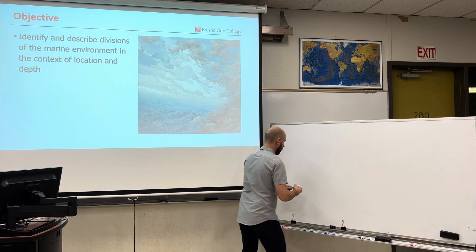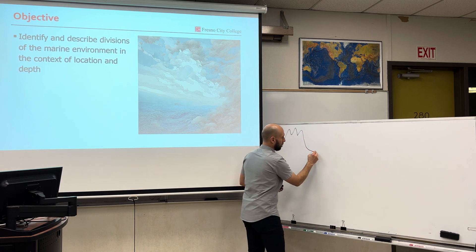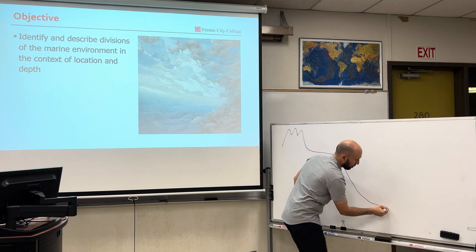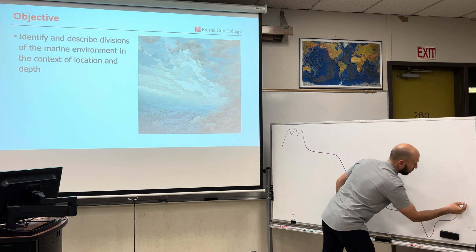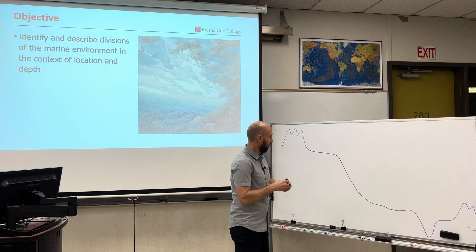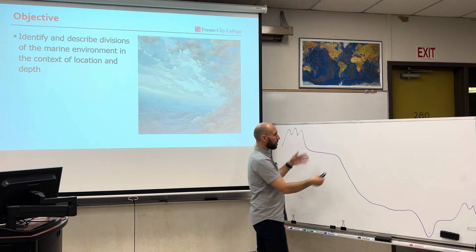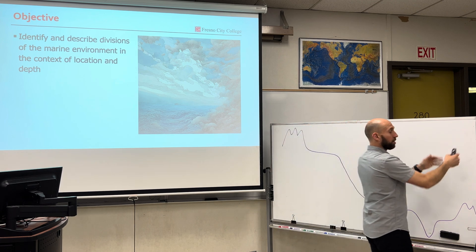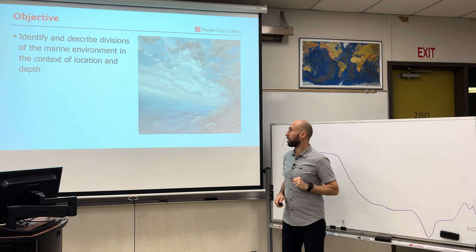So it's going to go a little bit like this. Here's some land, continental shelf, deep ocean basin, there's a trench, and a mid-ocean ridge. Not to scale, obviously. Continental margin, deep ocean basin, mid-ocean ridge — those are the three marine provinces.